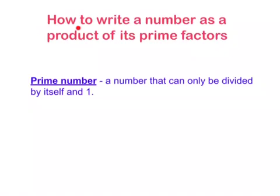Today I'm going to show you how to write a number as a product of its prime factors. Firstly, what is a prime number? A prime number is a number that can only be divided by itself and one. For example, if we had the number two, we can only divide it by two and one.